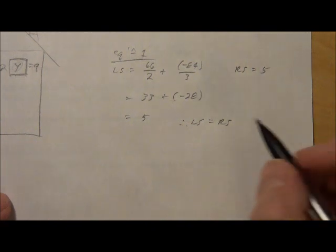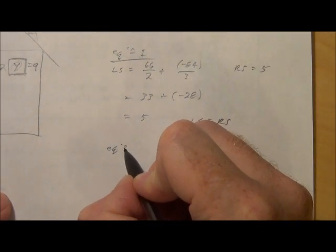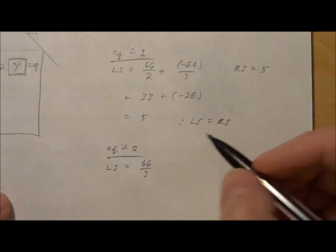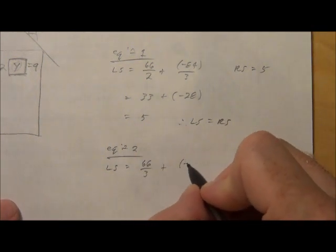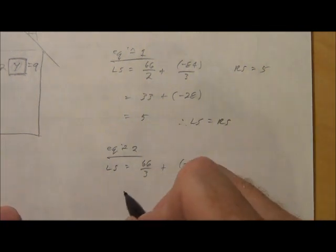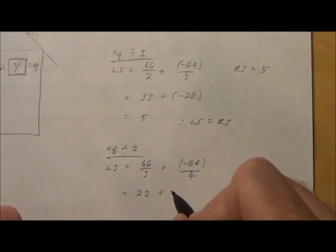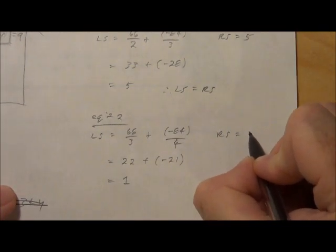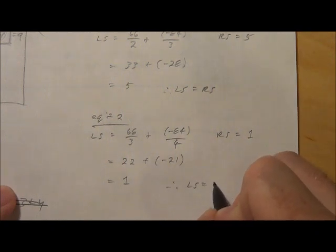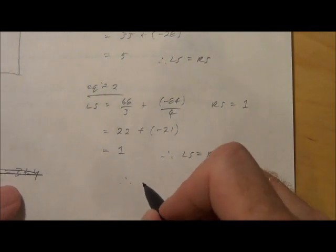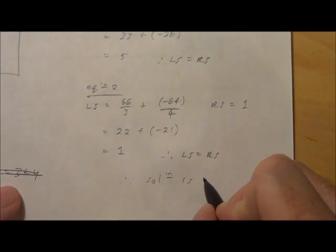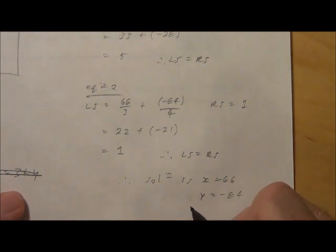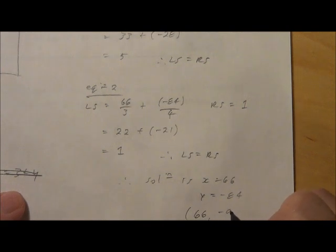Okay, so far so good. Now in equation 2, we also have to check that. The left side is, and substituting in the values for x and y, 66 over 3 plus negative 84 over 4. So we get 22 plus negative 21, that equals 1. And the right side, as you can see, equals 1. Therefore, left side equals right side. Therefore, the solution is x equals 66, y equals negative 84, which can also be written in ordered pair form 66, negative 84.